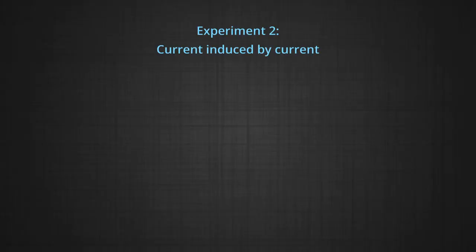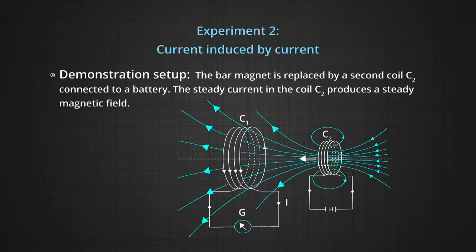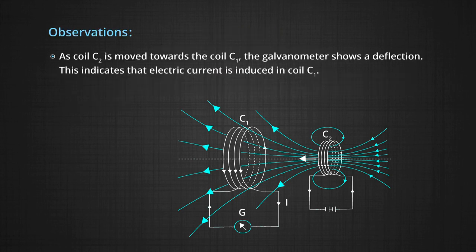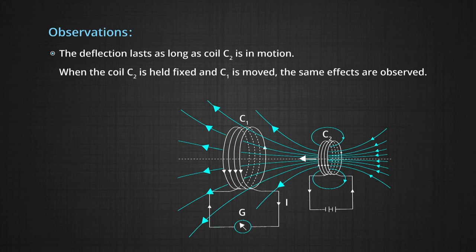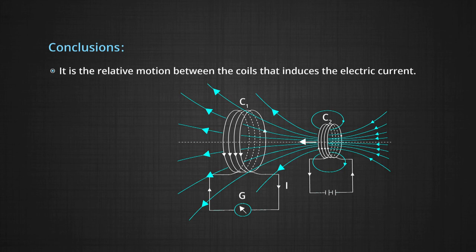Experiment 2: Current induced by current. The bar magnet is replaced by a second coil C2 connected to a battery. The steady current in coil C2 produces a steady magnetic field. As coil C2 is moved towards coil C1, the galvanometer shows a deflection, indicating that electric current is induced in coil C1. When C2 is moving away, the galvanometer shows a deflection again but in the opposite direction. The deflection lasts as long as coil C2 is in motion. When coil C2 is held fixed and C1 is moved, the same effects are observed. Again, we conclude that it is the relative motion between the coils that induces the electric current.